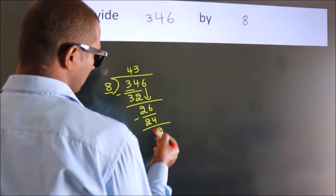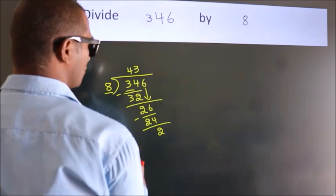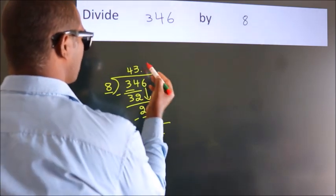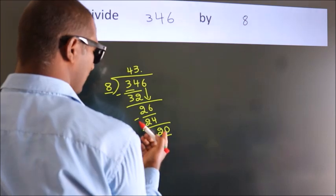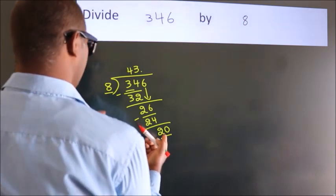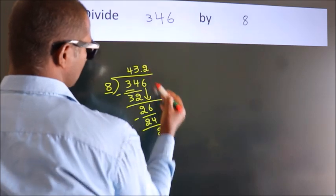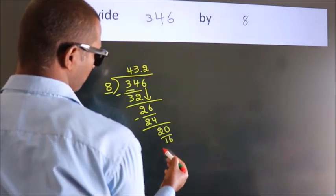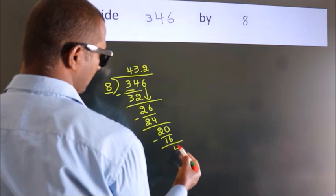After this, no more numbers to bring it down. So what we do is we put dot, take 0. So 20. A number close to 20 in 8 table is 8 twos 16. Now we subtract. We get 4.